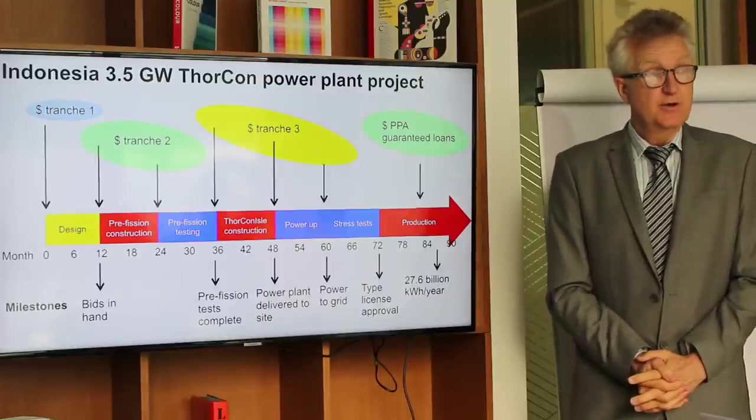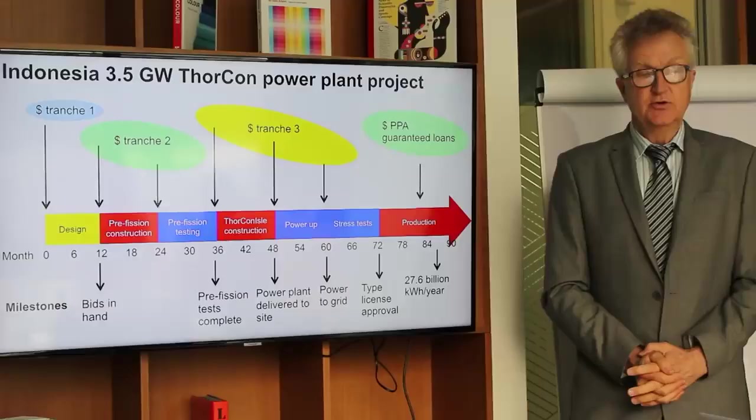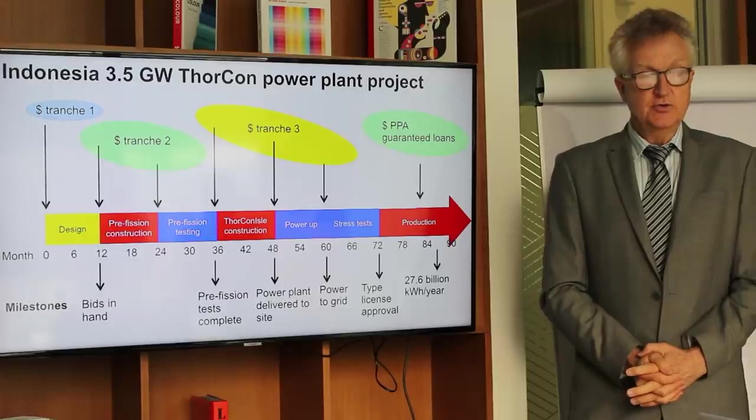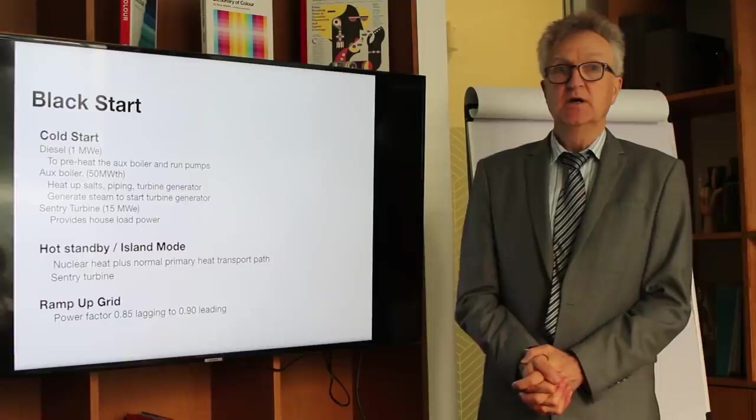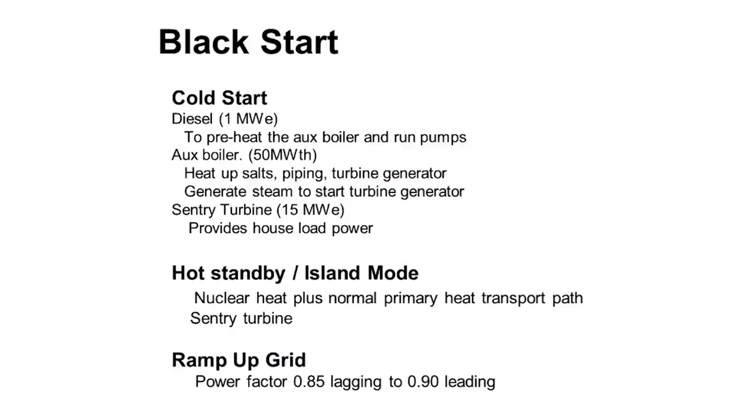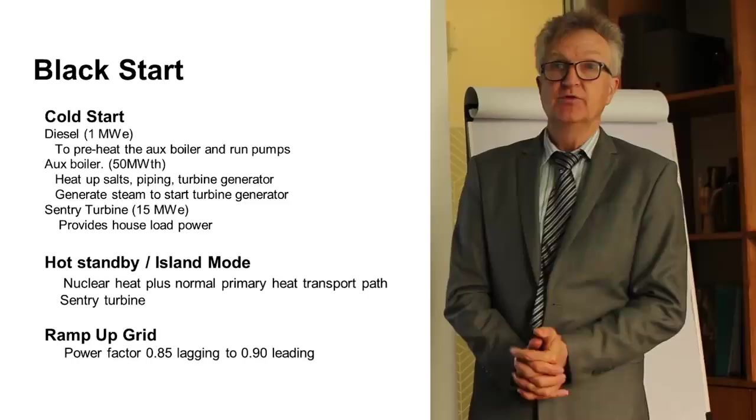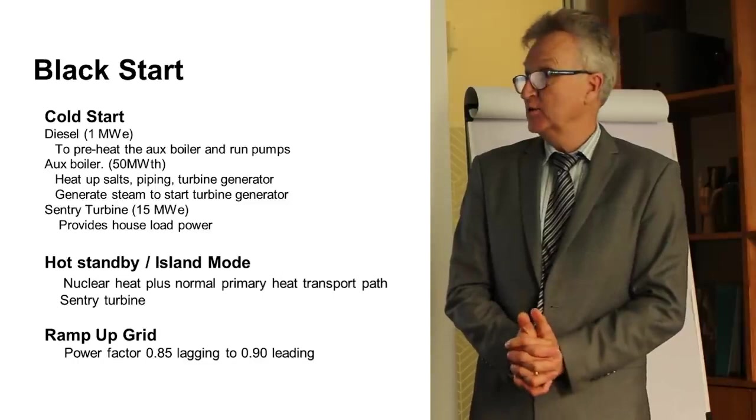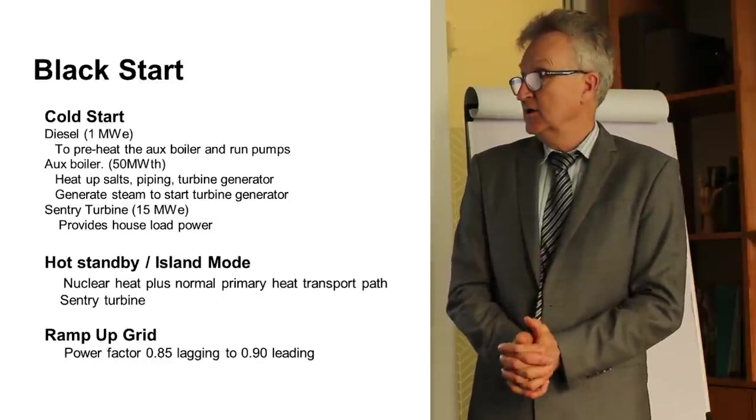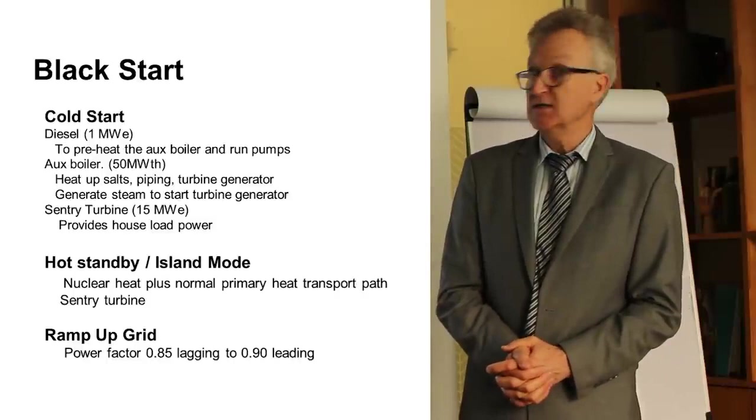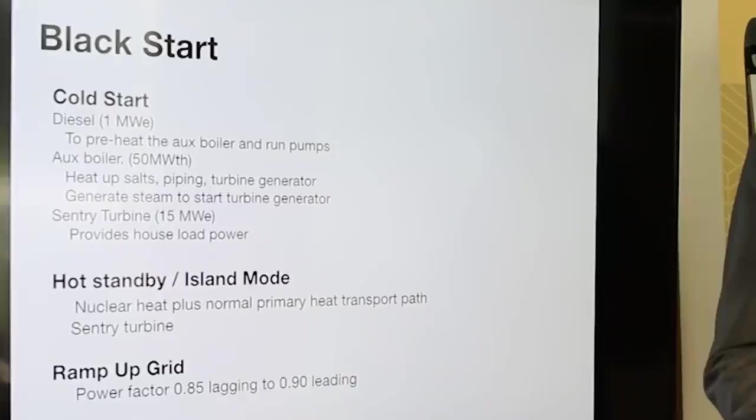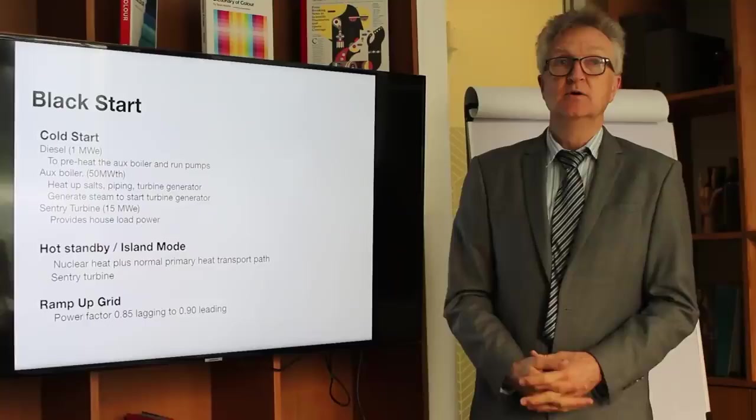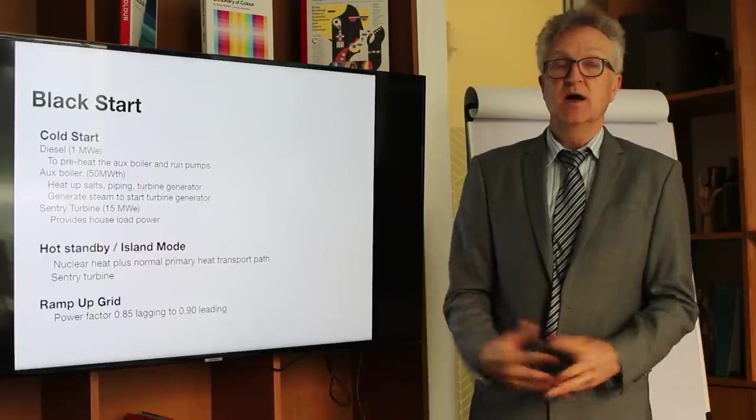It takes about a year to build and about a year to do the startup tests that need to be done before it can be on the grid. Two years from the time that you have the order, the site license, and you have the local building permits before we can put power on the grid. It lets you respond quickly to changes in demand. If the plant was cold, like it would be when we first installed a power plant, we used diesel, which is about a one megawatt electric, to preheat the auxiliary boiler and run pumps. Then we used the auxiliary boiler, which is about 50 megawatts thermal, to heat up the salts and the piping and the turbine generator, and generate some steam flow through the turbine. We used the starter turbine to use that steam to generate 15 megawatts electric. That provides house load power so it can start pumping salts and seawater and such around. We can then transition to hot standby or island mode, where we would use normal nuclear heat and come down the primary heat transport path to the starter turbine. All of this would be covered by the nuclear side, and then we'd pick up with the starter turbine. And we can sit in that mode for days, years even.